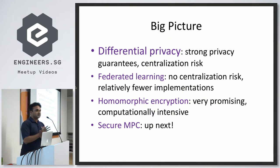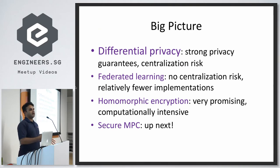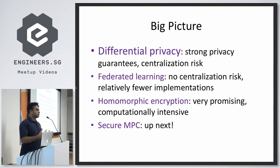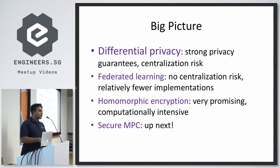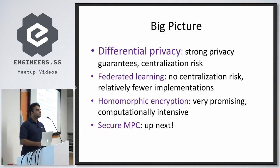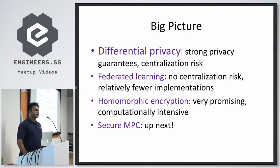Big picture: differential privacy gives you strong mathematical privacy guarantees but suffers from centralization risk. Federated learning does not have centralization risk but has very few practical open-source implementations and only Google really does it. Homomorphic encryption is very promising but computationally expensive. The last option is secure MPC — multiparty computation — which is the one we'll delve into in a bit more depth.